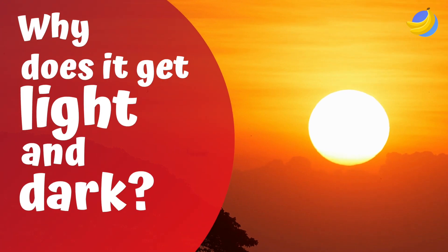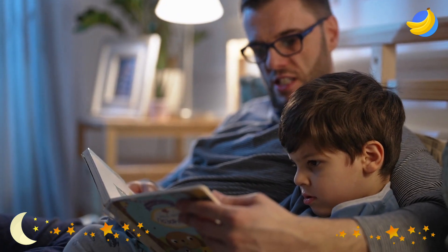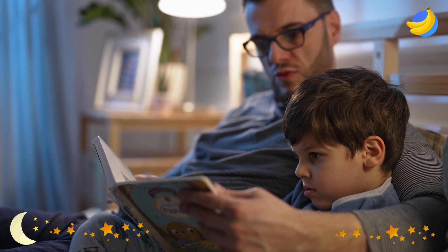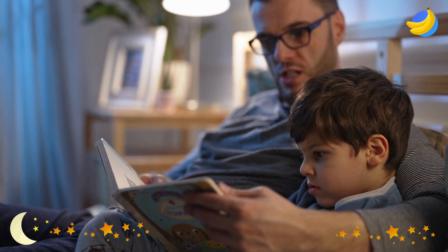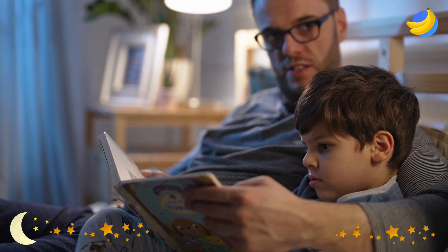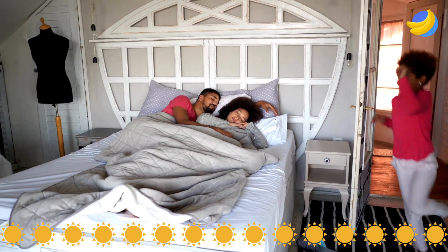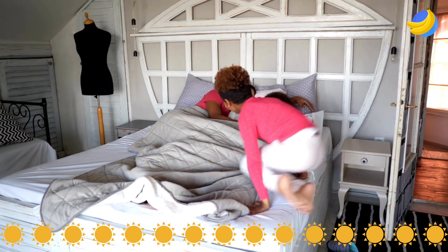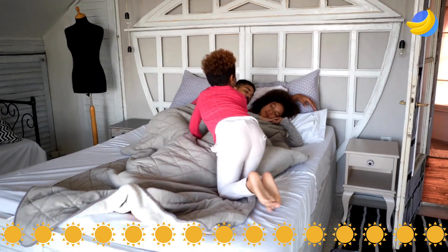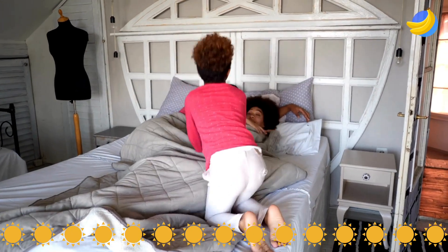Why does it get light and dark? When you go to bed at night, it is dark. When you get up in the morning, it is usually already light.